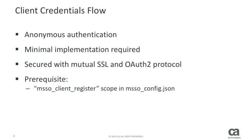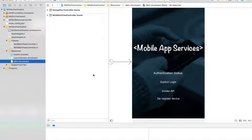Before using the client credentials flow, one thing I have to make sure is that the proper set of scopes is properly registered on the client on the backend service and exported in the JSON configuration file. I'll have to make sure the MSSO client register scope is properly exported in the MSSO config file.